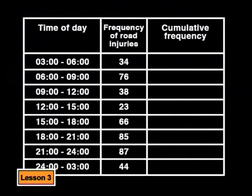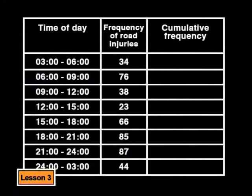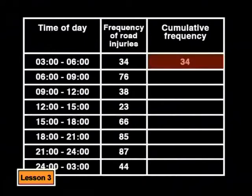To find the cumulative frequency, I need to add up all the frequencies in the previous rows of the table. The first cumulative frequency will be the same as the frequency because there is nothing to add up yet, so it will be 34. The next cumulative frequency will be 34 plus the value of the second class interval, that's 76.